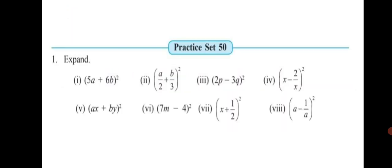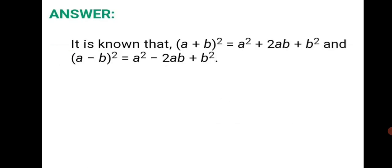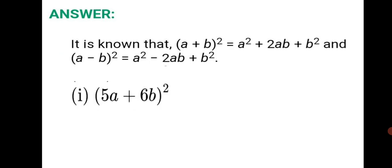Practice Set 50, Question 1: Expand. You have 8 sums to expand. Using the formulas — (a+b)² = a² + 2ab + b² and (a−b)² = a² − 2ab + b² — we will solve all 8 sub-questions. First one: 5a plus 6b, the whole square.